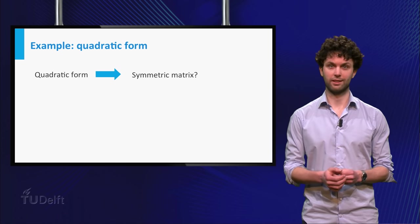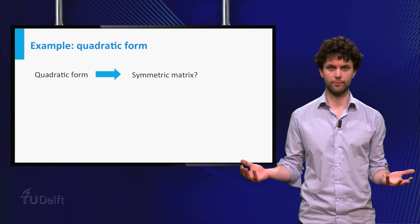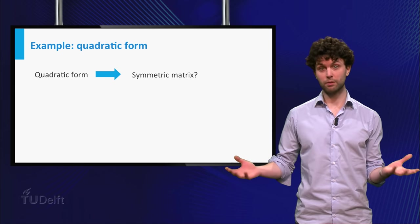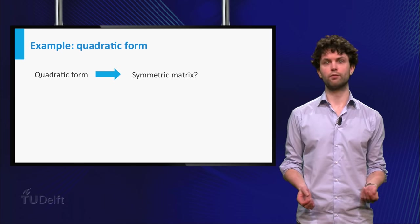Alright, you know how to compute a quadratic form from a symmetric matrix A. Let's now reverse these rules. How do you obtain a symmetric matrix from a given quadratic form?